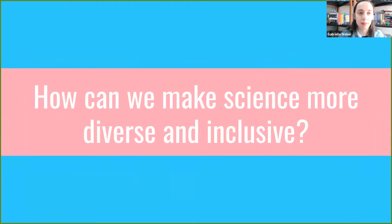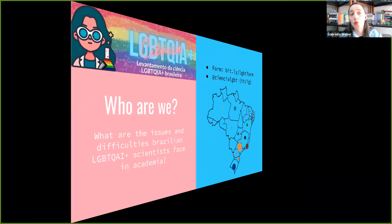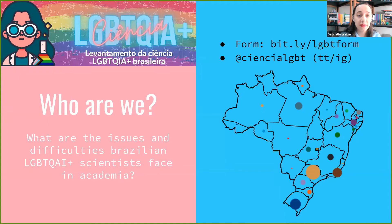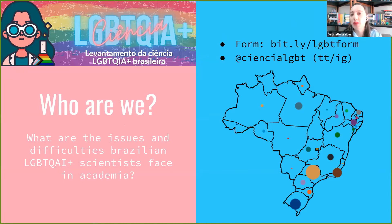How can we make science more diverse and inclusive? First, we need to know who we are. The APS and IOP studies were focused on the US and UK — we know nothing about Latin America. So together with Fernanda from Parenting Science, Cristal, and Rebecca, we started a survey in Brazil to know where LGBTQ people are and which difficulties we face. We started collecting data in early June and already have a thousand responses.